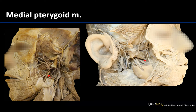The medial pterygoid's proximal attachments are on the maxillary bone, the palatine bone, and the medial surface of the lateral pterygoid plate of the sphenoid — while the lateral pterygoid attaches to the lateral surface of that same plate. Its distal attachment is on the ramus of the mandible. If you were to lift the neurovasculature, you would be looking directly at the medial pterygoid.